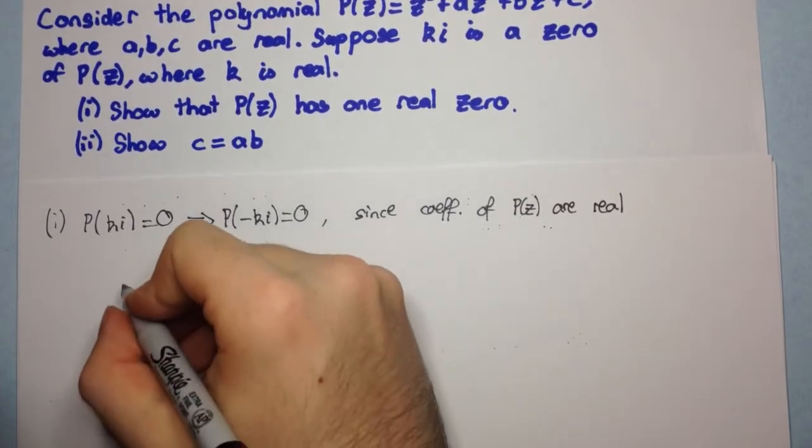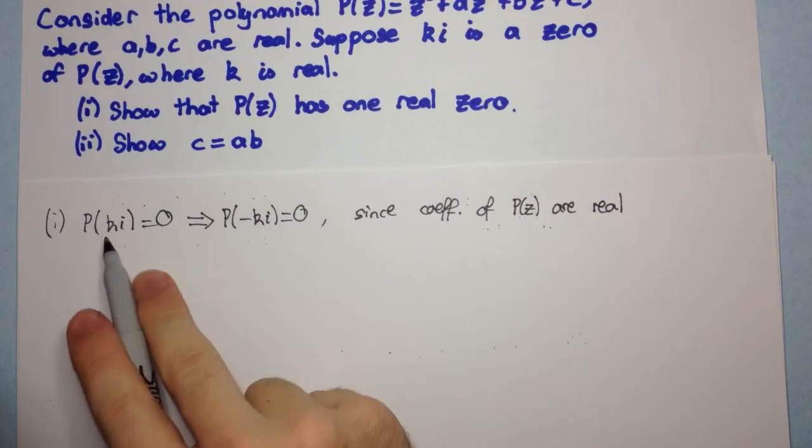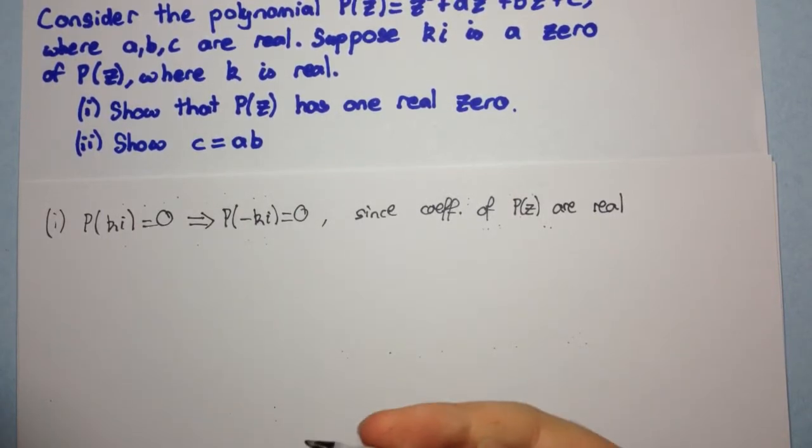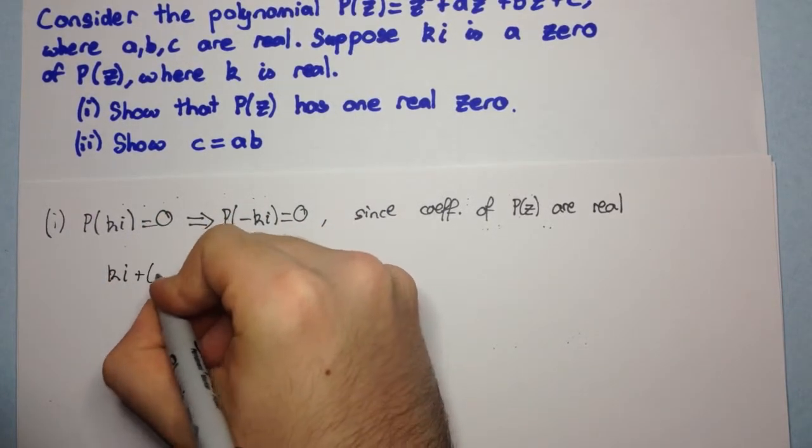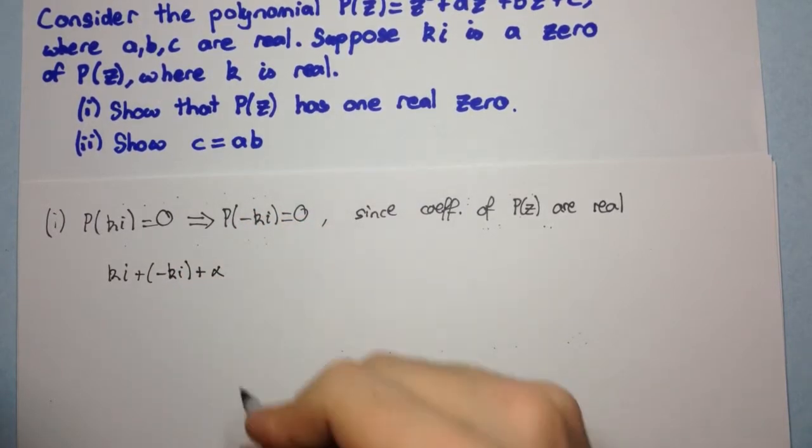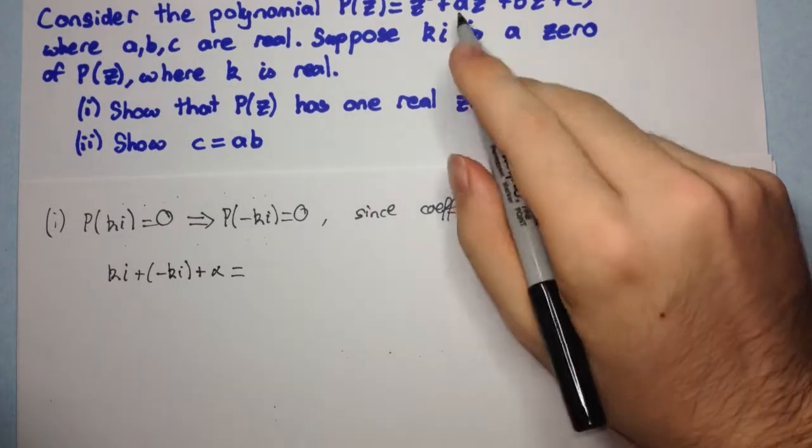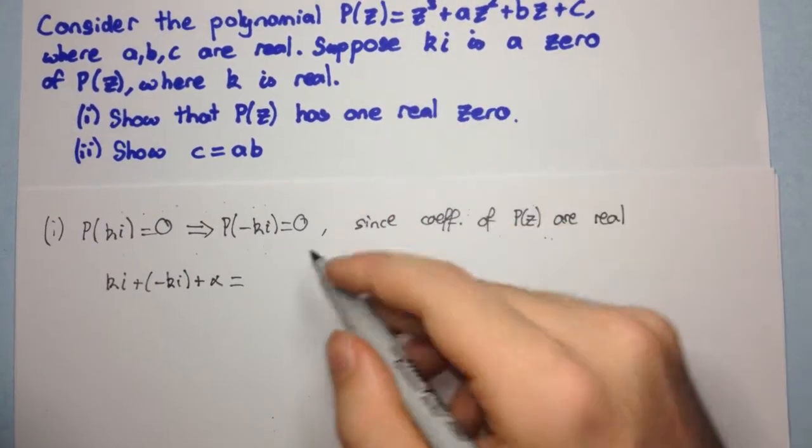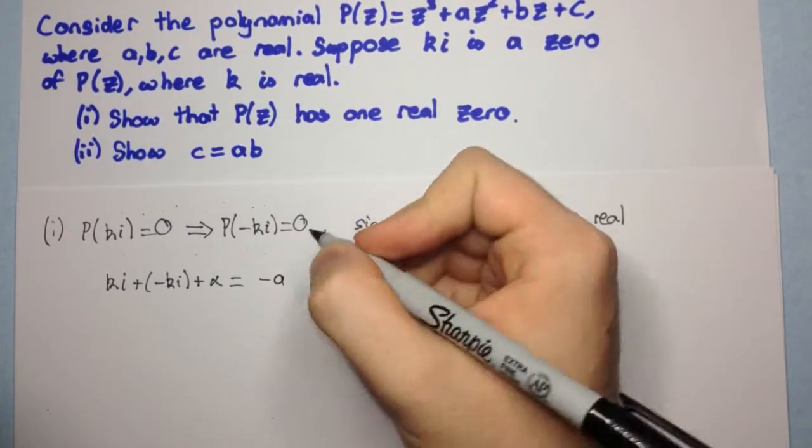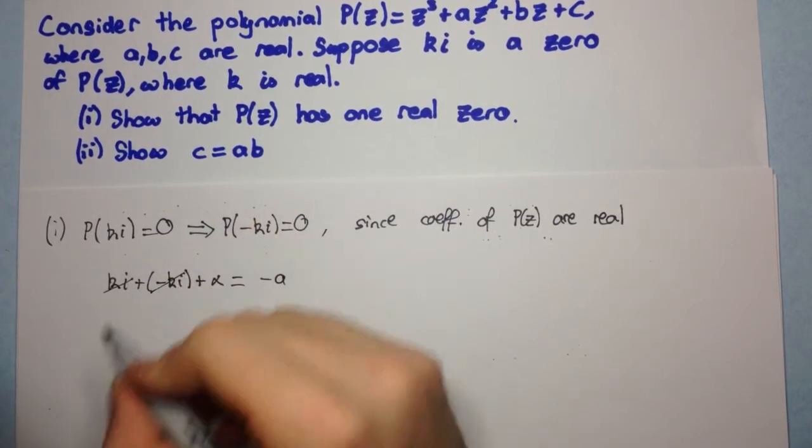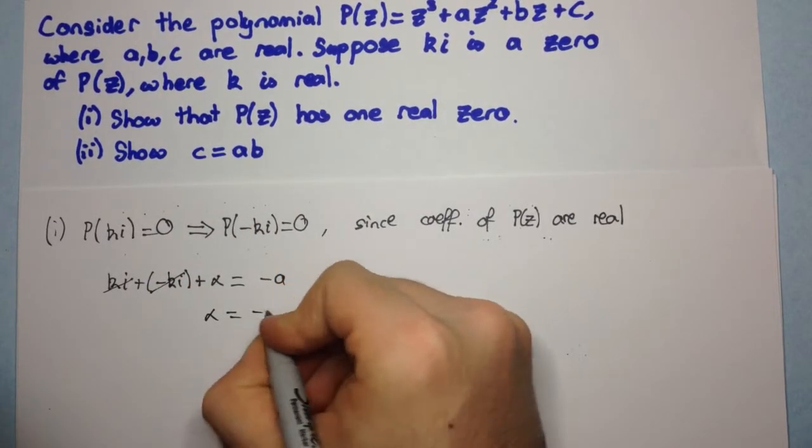Okay, now let's consider the sum of roots. So, we already have two roots. We have Ki and minus Ki. Let's just call Alpha the other root. So, we have Ki plus negative Ki plus Alpha, and that's equal to minus the coefficient of Z squared over the coefficient of Z cubed. So, that's going to be minus A on 1, which is minus A.